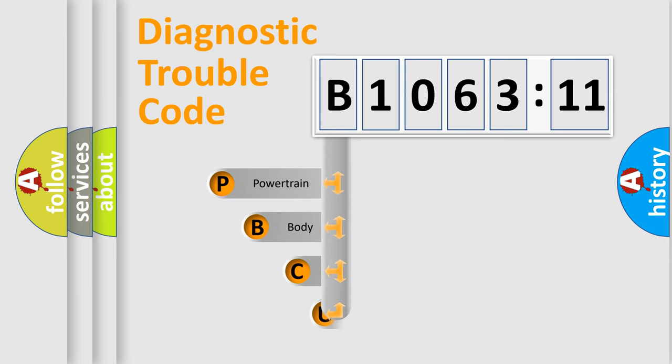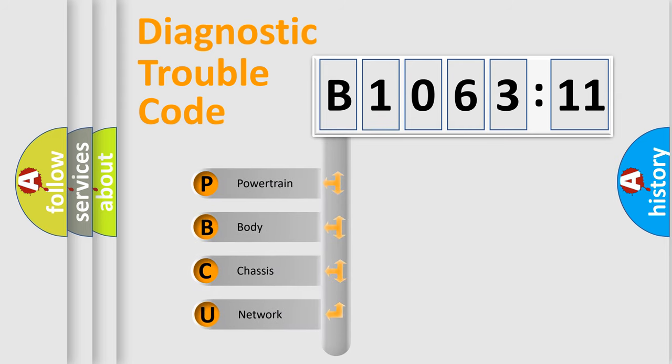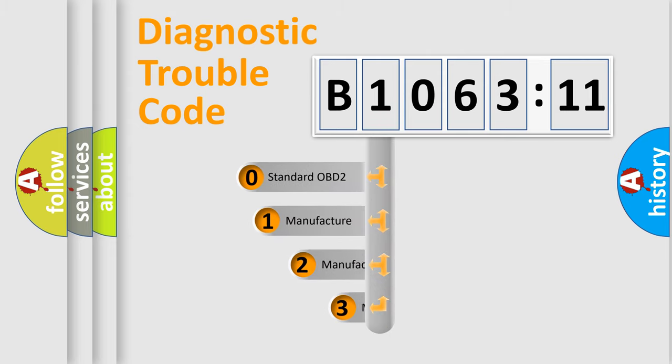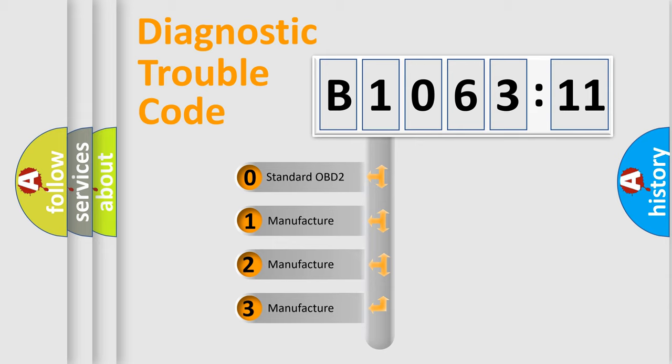First, let's look at the history of diagnostic fault code composition according to the OBD2 protocol, which is unified for all automakers since 2000. We divide the electric system of automobile into four basic units: Powertrain, Body, Chassis, Network. This distribution is defined in the first character code.